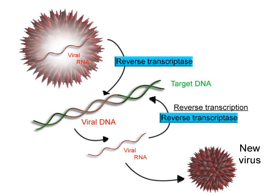In bacteria, RNA polymerase holoenzyme consists of 5 subunits: 2 α subunits, 1 β subunit, 1 β' subunit, and 1 ω subunit. In bacteria, there is one general RNA transcription factor, σ. RNA polymerase core enzyme binds to the bacterial general transcription factor σ to form RNA polymerase holoenzyme and then binds to a promoter. In archaea and eukaryotes, RNA polymerase contains subunits homologous to each of the 5 RNA polymerase subunits in bacteria and also contains additional subunits.